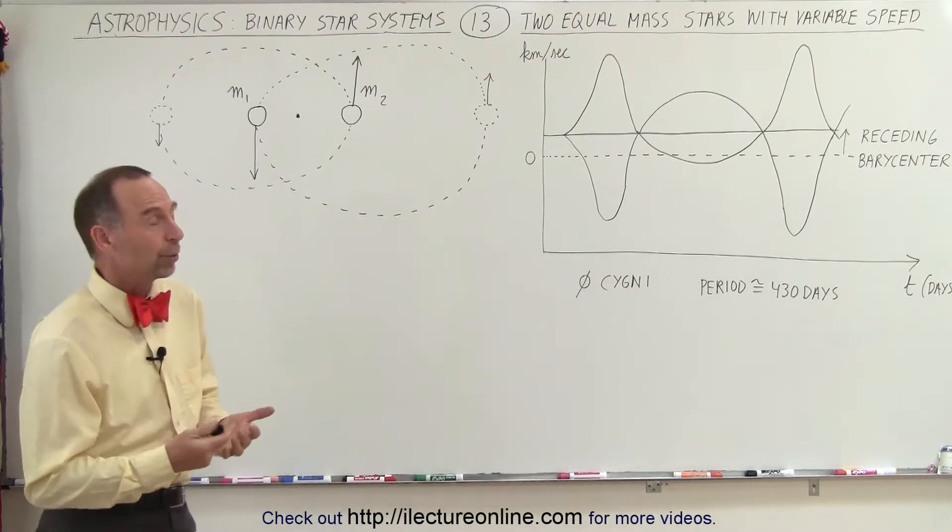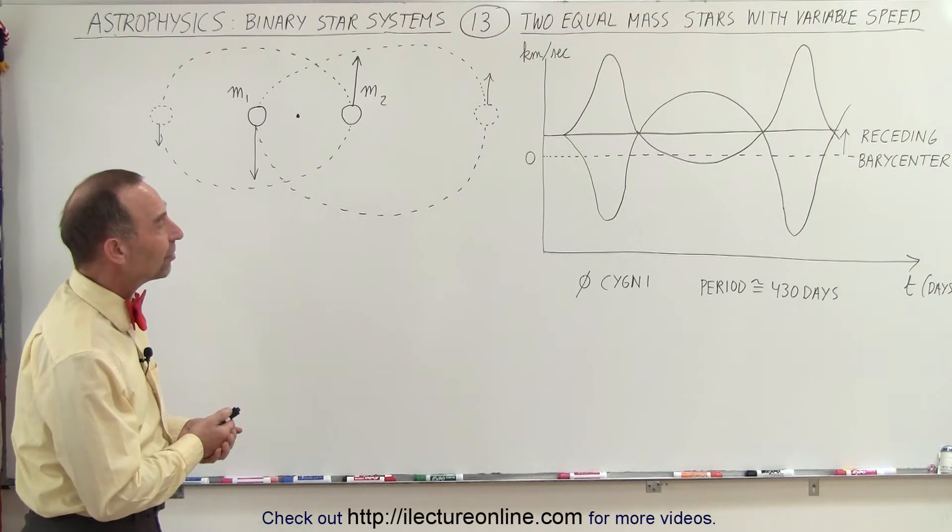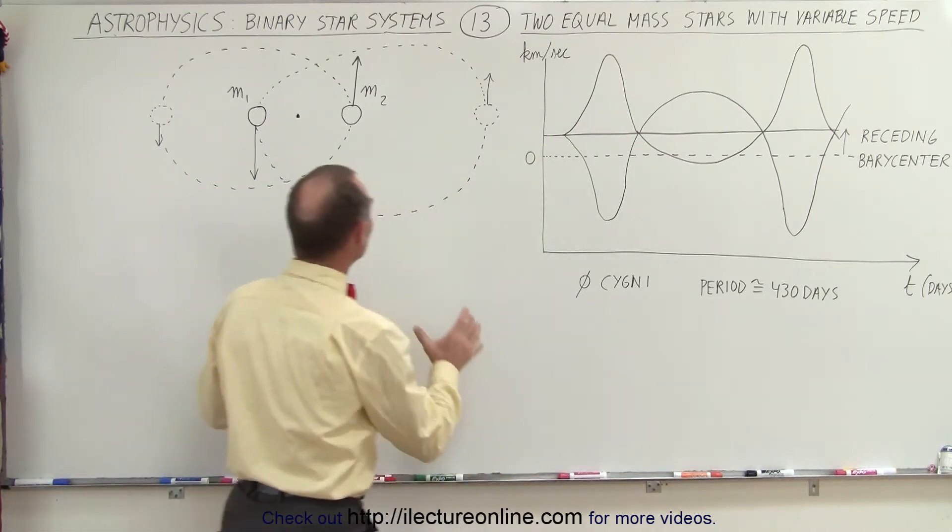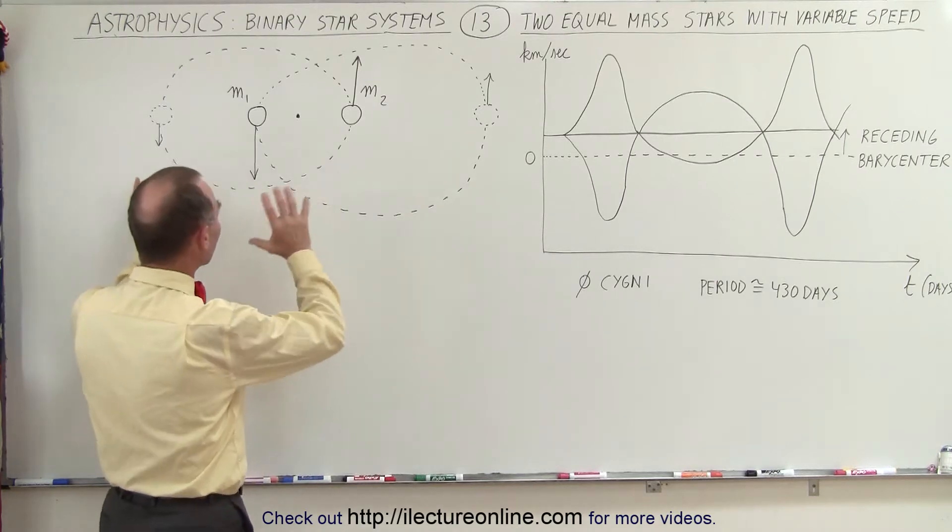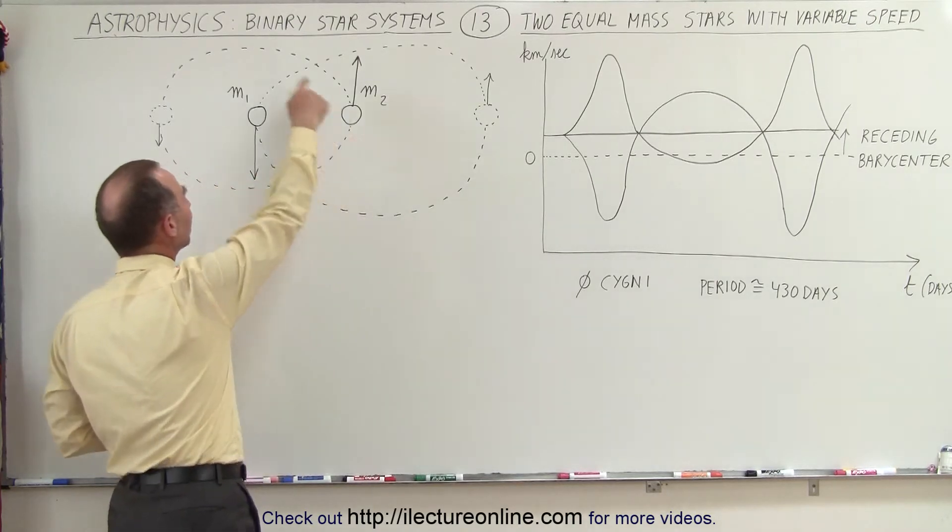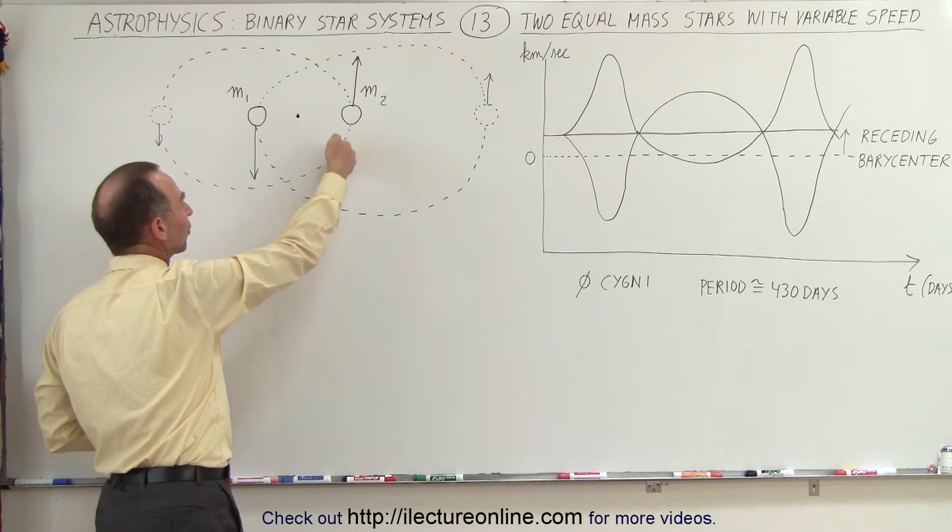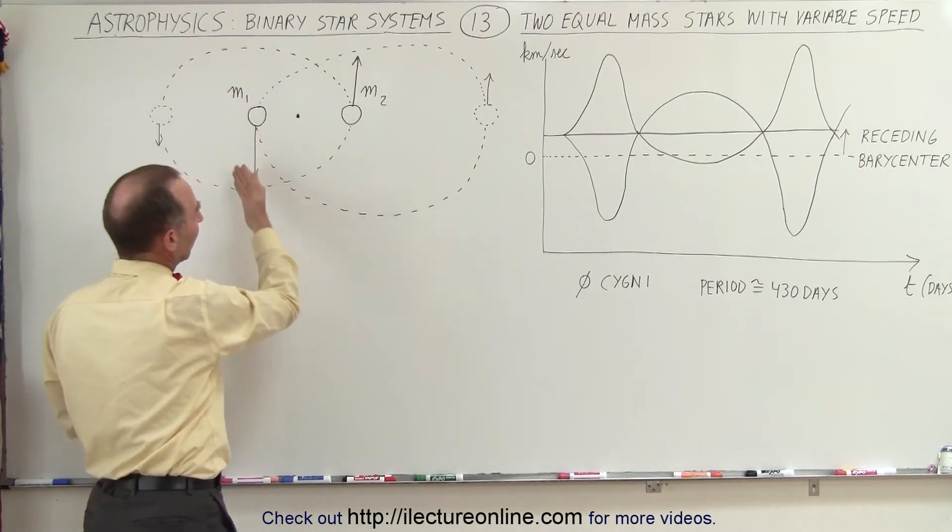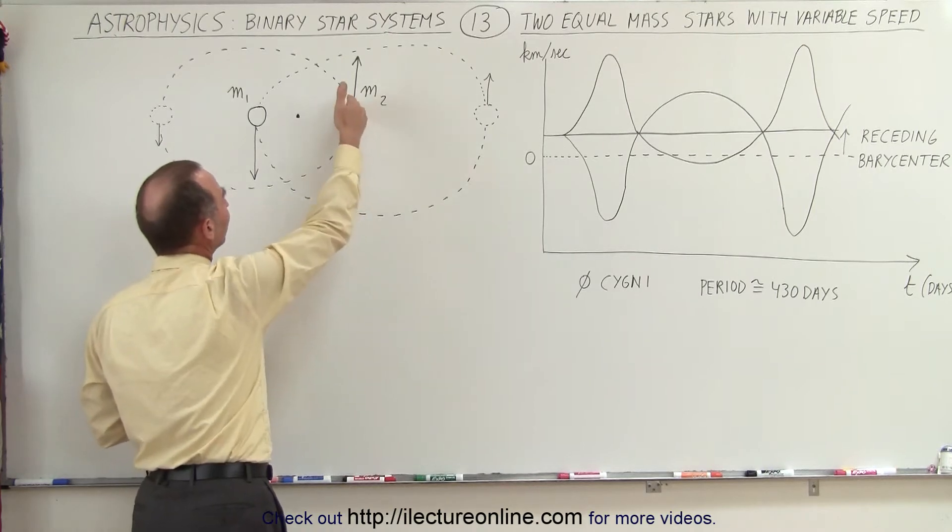They have elliptical orbits. An example of that is the binary star system called Psi-Signi, which have about equal mass. M1 and M2 are about the same, but as you can tell here by the sketch, sometimes they're much closer to the barycenter, sometimes they're much farther away, which means as they are closer, they move a lot faster.